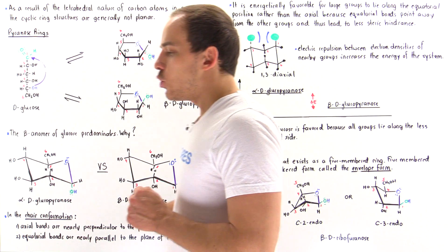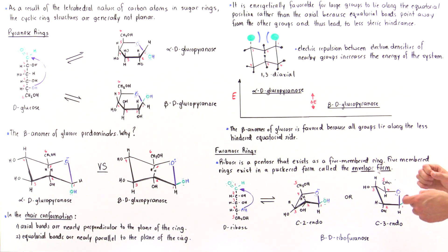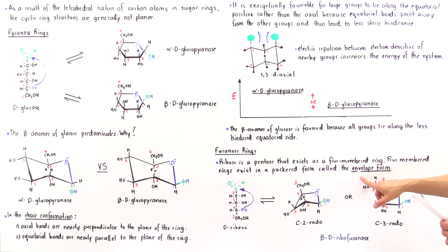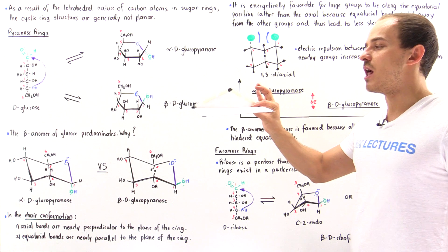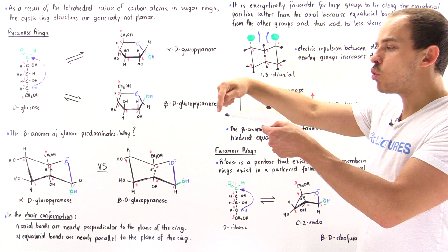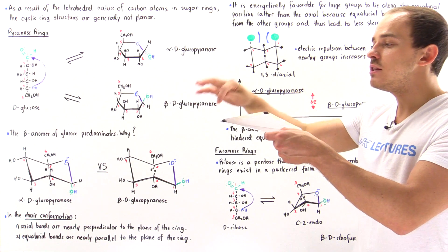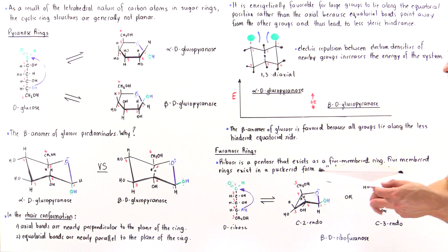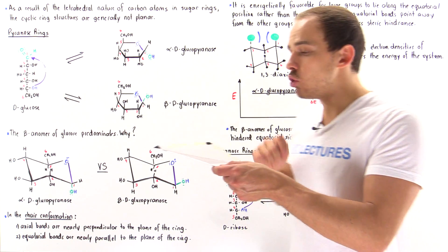Unlike six-membered rings, which exist in the chair conformation, five-membered sugar molecules exist in a puckered form called the envelope form. We call it the envelope form because it looks like a simple envelope — on an envelope, the four corners lie along the same plane and are coplanar. By the same analogy, in the five-membered ring of ribose, four of these atoms will lie along the same plane.